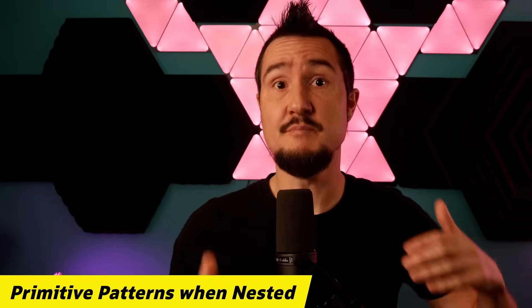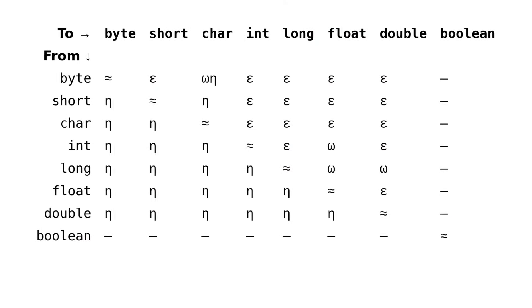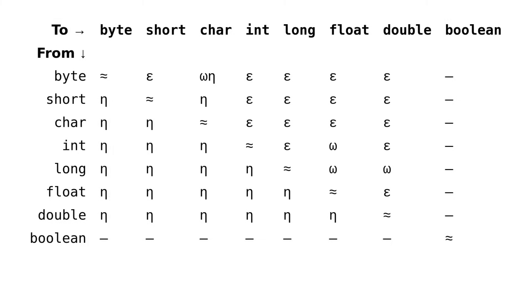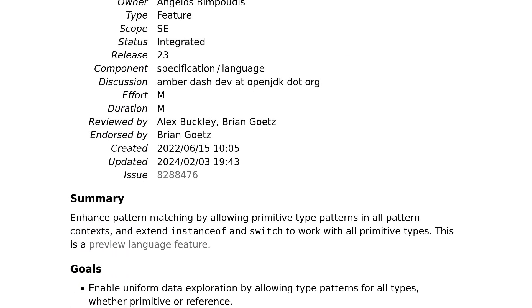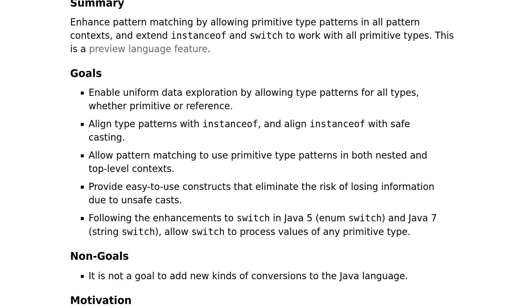There's one more place where primitive patterns improve balance, and that's in nested patterns. If you deconstruct a record, you don't have to match the component types exactly — you can use subtypes of the component types to only select those record instances that hold an instance of that subtype. That used to not apply to primitive components; you had to match those exactly. With the semantics of primitive patterns, that'll be a thing of the past. You can now select those record instances whose component fits, for example, into a byte, regardless of whether it is declared as a byte or any other primitive numerical type. There's more detail in JEP 455, which proposes to preview primitive patterns in JDK 23 and is already integrated — so you can download a JDK 23 early access build right now and start playing with them.